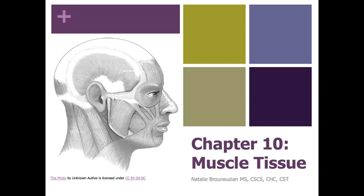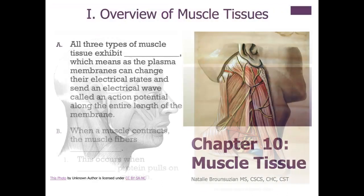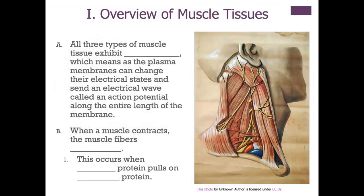Hello and welcome to your chapter 10 video lecture where we are going to talk about muscle tissue. First let's do an overview of the muscles. All types of muscle tissue are going to exhibit excitability, which means that our plasma membrane can change its electrical state and send an electrical wave — an action potential or nerve impulse — along the entire length of that membrane.